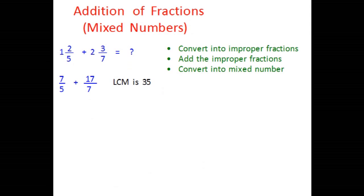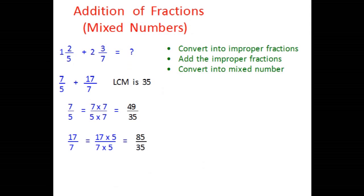Now we need the LCM of 5 and 7, which is 35. For 7 over 5, multiply numerator and denominator by 7 to get the equivalent fraction 49 over 35. For 17 over 7, multiply numerator and denominator by 5 so the denominator becomes 35, giving the equivalent fraction 85 over 35. Now add these like fractions: 49 plus 85 gives a sum of 134, with denominator 35.